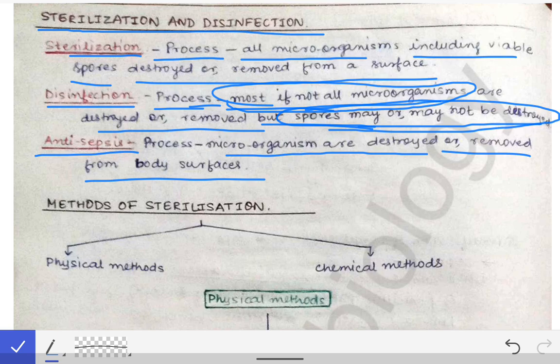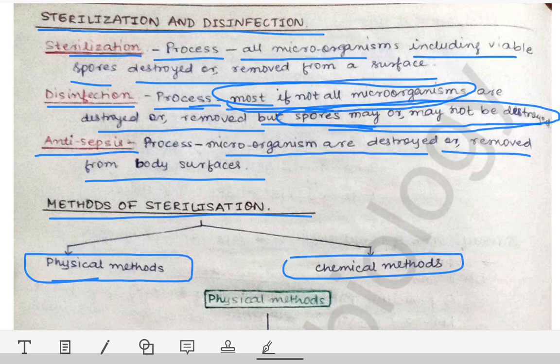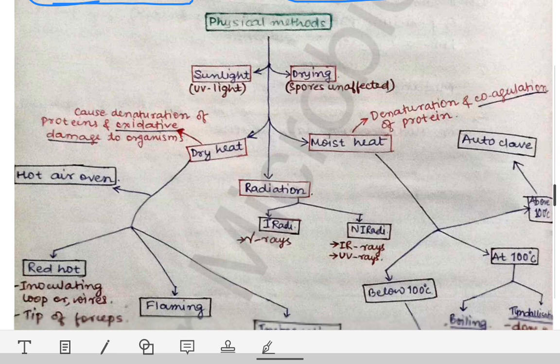Whenever a short answer question or short note is asked on sterilization in exams, you have to write the definition of sterilization and then describe the methods briefly. The methods of sterilization are divided into two categories: physical methods and chemical methods. Coming first to the physical methods.